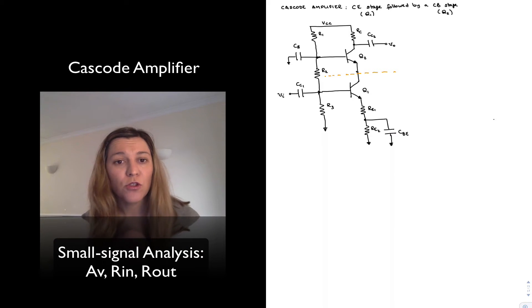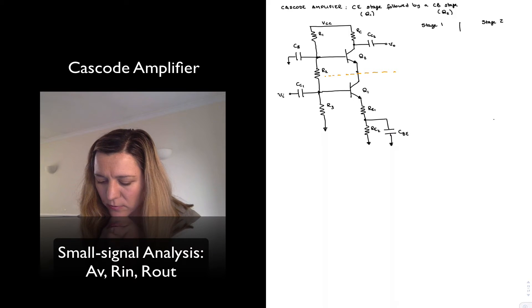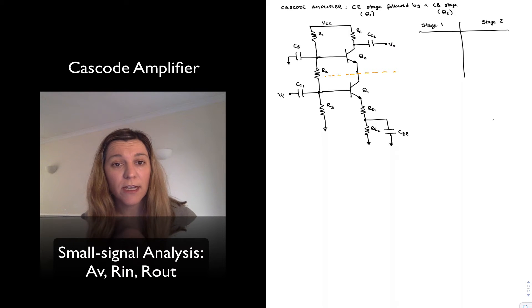And I'm not going to do the small signal analysis. You can take a look at that in the textbook. But we're going to derive the voltage gain in a little bit more intuitive manner, if you will. I'm going to look at both the stages. Stage 1, the common emitter, and stage 2, the common base. And I have already derived expressions for the voltage gain of a common emitter and a common base amplifier.